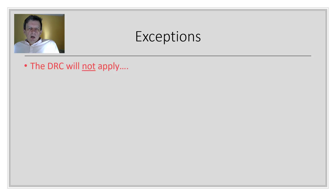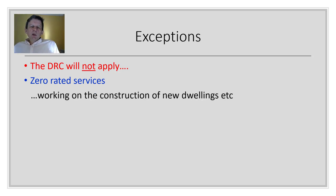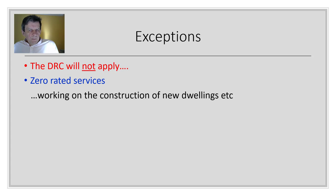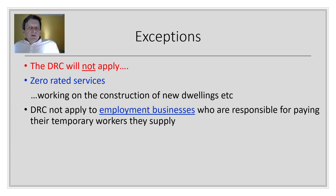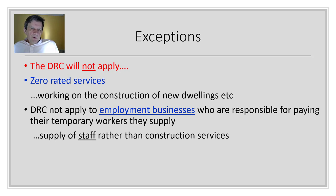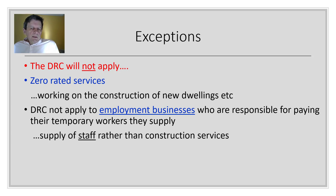There are exceptions to the domestic reverse charge. First, it does not apply to zero-rated services — for example, house-building, where services like carpentry and electrical work come in at zero-rate. There is no risk of missing trader VAT there, so they stay outside the DRC provisions. Second, the DRC does not apply to employment businesses, because they supply staff rather than construction services. If a client requests four carpenters on site on Monday and you supply them, you are supplying staff, not carpentry services — so employment businesses continue to charge VAT as before.